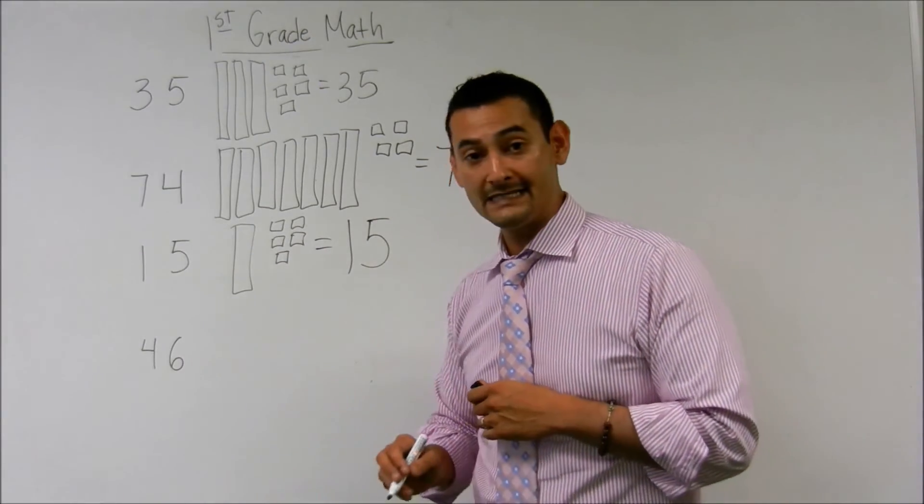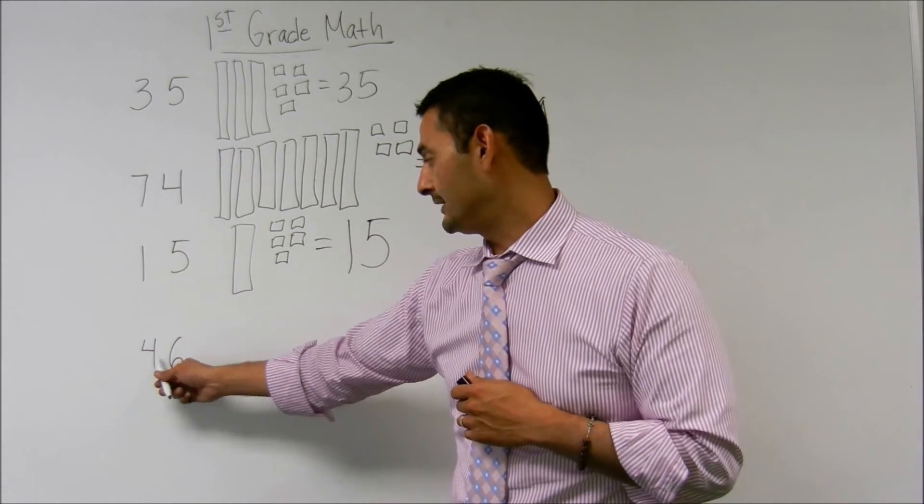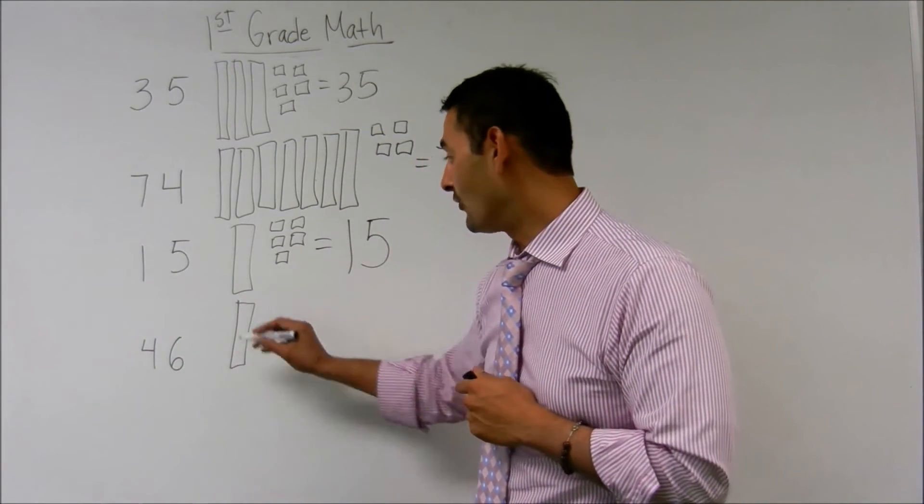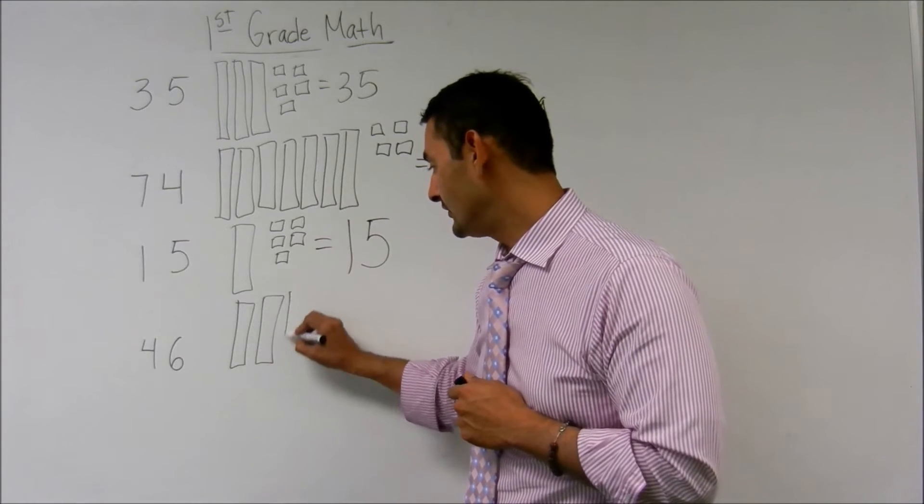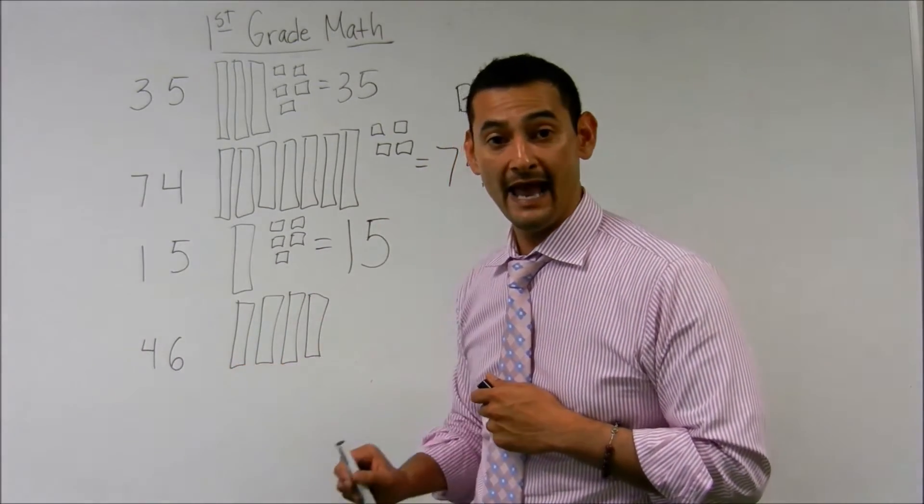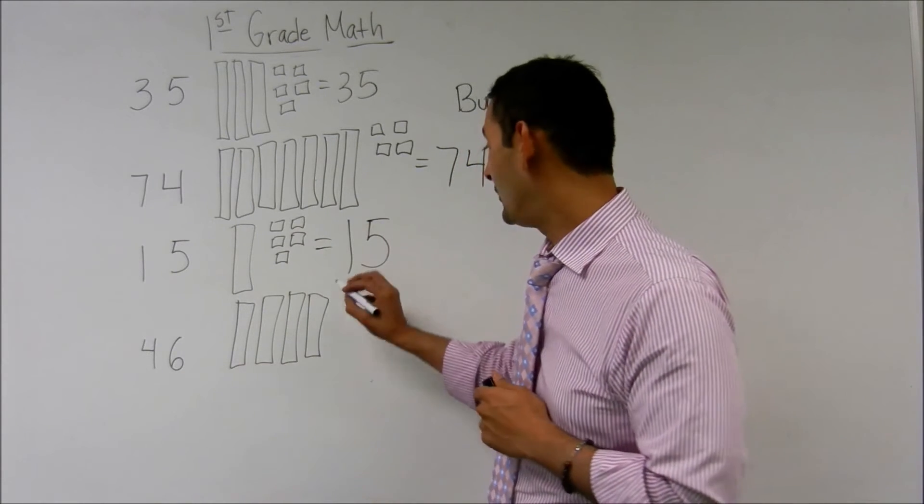Now let's take a look at forty-six. Let's look at the tenths place. Here we have four, so how many am I going to draw? That's right, four. One, two, three, and four. How many ones do I have? I've got six ones. Outstanding.